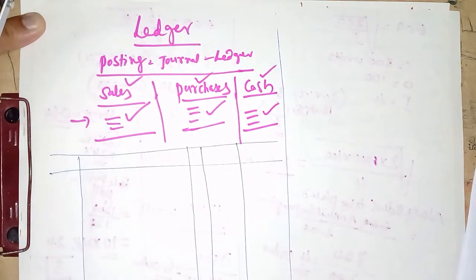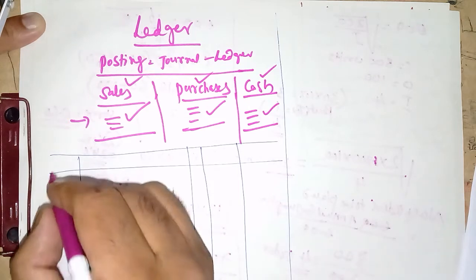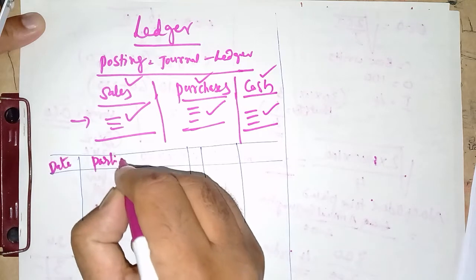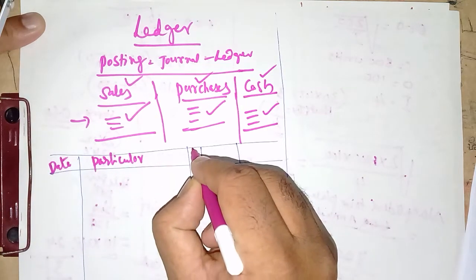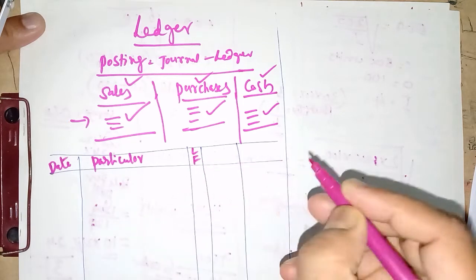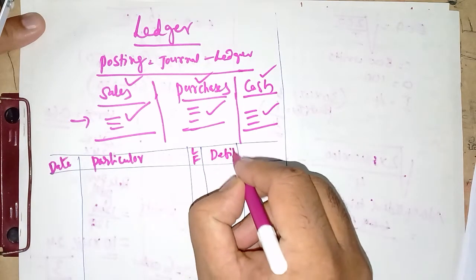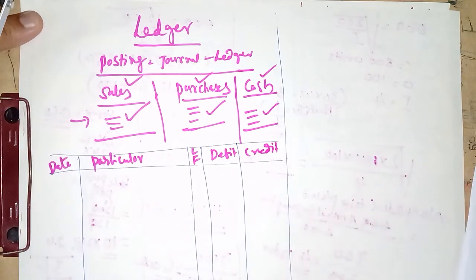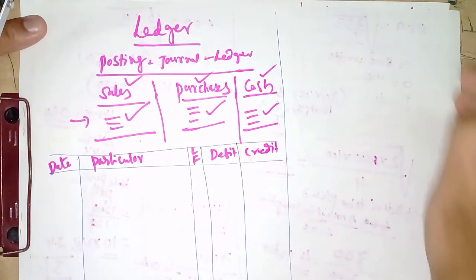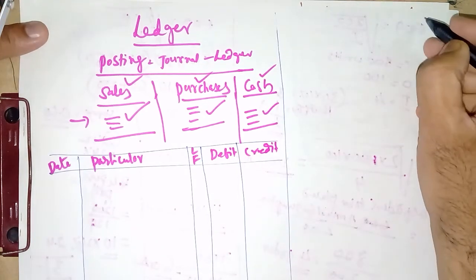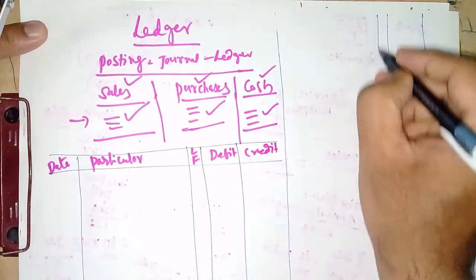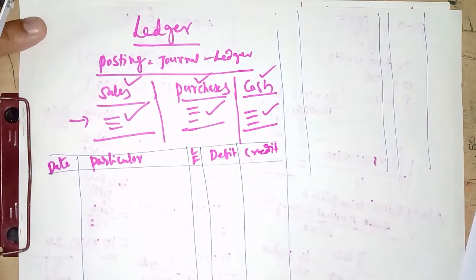The journal format contains the columns: date, particulars, LF (ledger folio), debit, and credit. We record transactions into the journal, then post them into the ledger. We will now go through the transactions in the question to understand the concept of ledger.